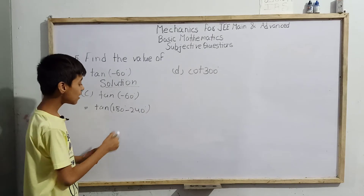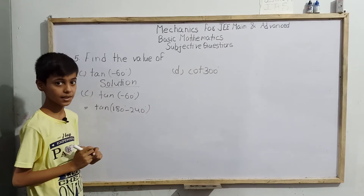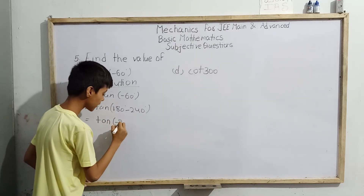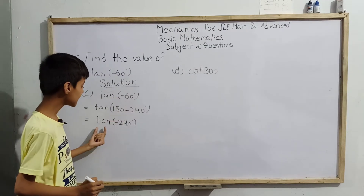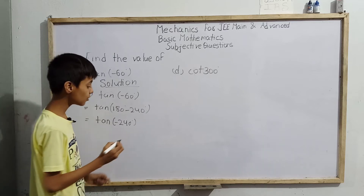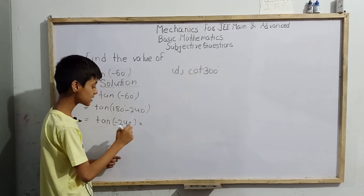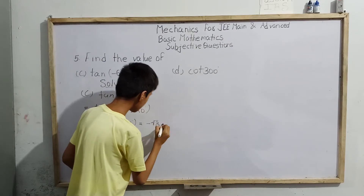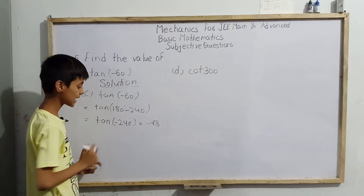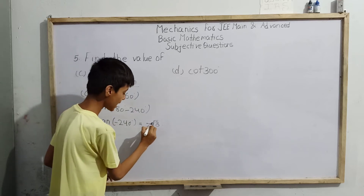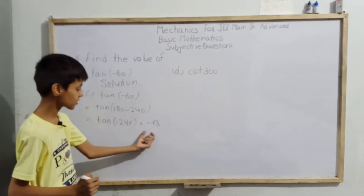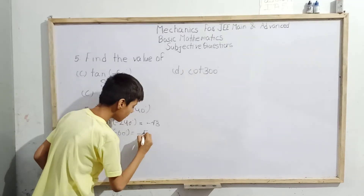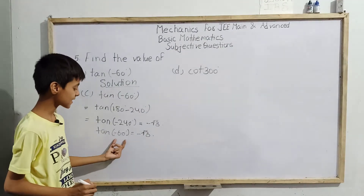We can write tan(-60°) as tan(180° - 240°). We know tan(180°) equals zero, so we get tan(-240°). Now tan(240°) equals √3, so tan(-240°) equals -√3. Therefore, tan(-60°) equals -√3. That is the answer for part c.